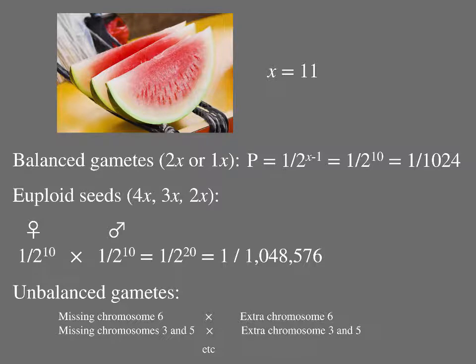For example, one gamete might be missing chromosome 6, and another might have an extra chromosome 6, etc. Although it's true that one meiosis would produce such complementary gametes, sperm and eggs must be the products of different meiosis. The probability of each possible type of fertilization between complementary gametes must be added to 1 out of 1,048,576 in order to obtain the overall chance of a viable fertilization between gametes produced by triploid watermelons.